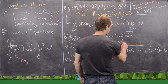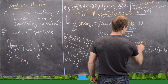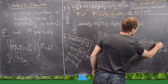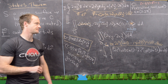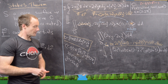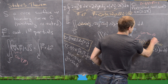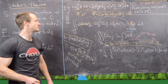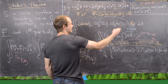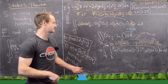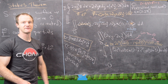After factoring and switching the order of integration, we do a substitution: let u = sin θ, so du = cos θ dθ. When θ = 0, u = 0, and when θ = 2π, u = 0 as well. Since the limits are equal, the theta integral is just zero — meaning the whole thing equals zero. That finishes the first example.